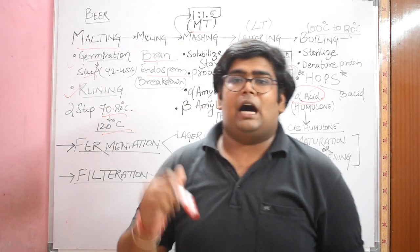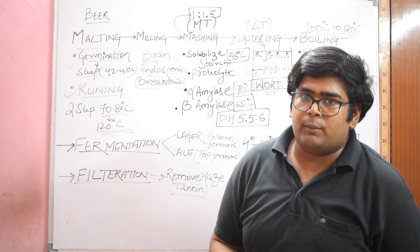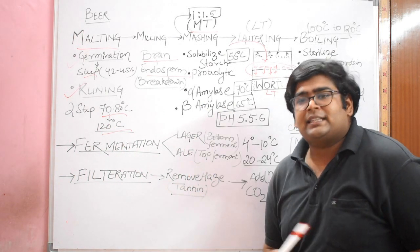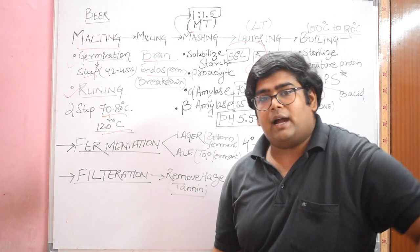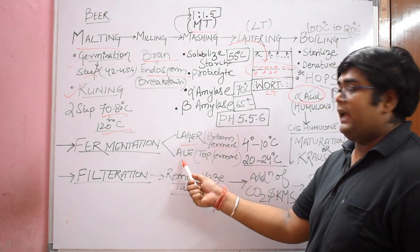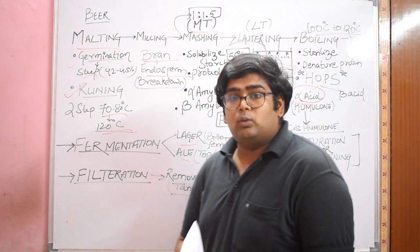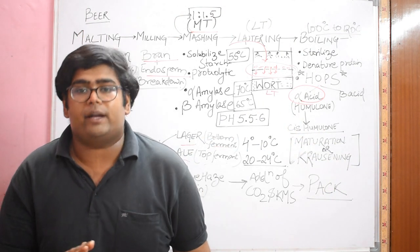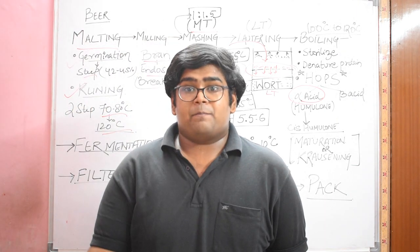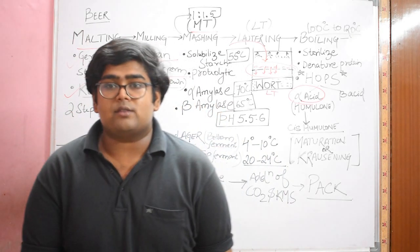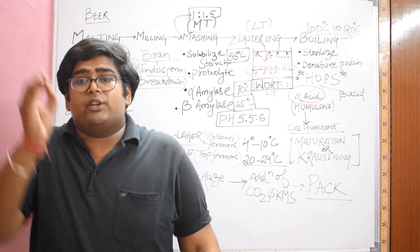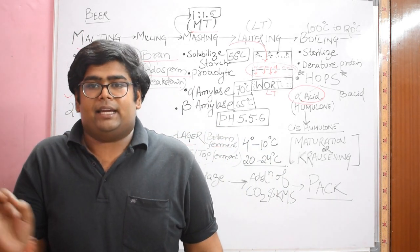The most important part comes now, that is the fermentation. Fermentation will start after boiling and cooling the wort. There are two classifications of beer itself: the lager beer and the ale beer. This is decided by the kind of fermentation that you are doing. If it's a lager beer, it will be a bottom fermented beer, and if it's an ale beer, it will be a top fermented beer. Bottom fermented means when your fermentation is complete, the yeast will settle down in your tank, which is called bottom fermentation. In ale, your yeast will come up in your tank, which is called top fermentation.